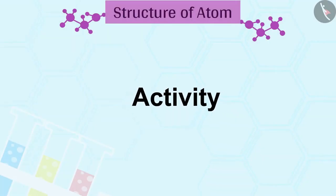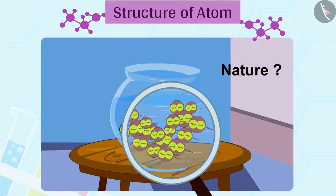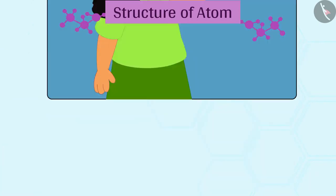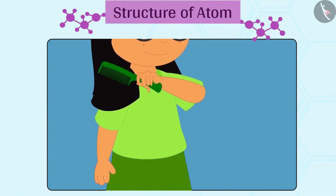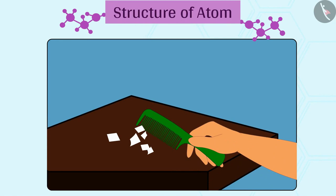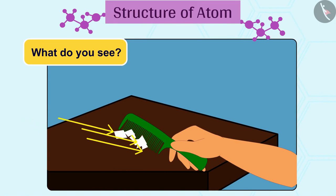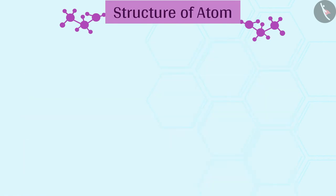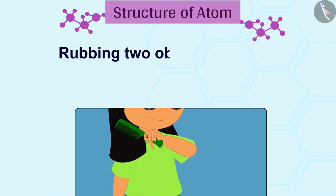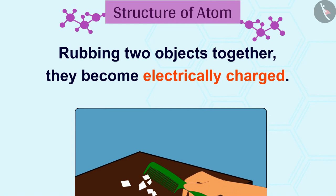Let us do an activity to know the nature of particles in matter. Comb dry hair. Now move this comb close to the small pieces of paper. What do you see? Yes, the comb attracts small pieces of paper. We conclude that on rubbing two objects together, they become electrically charged.